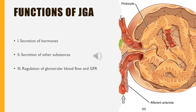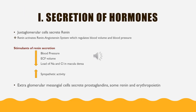The important functions of the juxtaglomerular apparatus are the secretion of hormones and other substances, and regulation of glomerular blood flow and glomerular filtration rate. The most important hormone secreted is renin by the juxtaglomerular cells, and prostaglandins by the extraglomerular mesangial cells. Renin activates the renin-angiotensin system, which is essential for regulation of ECF volume, blood volume, and blood pressure.